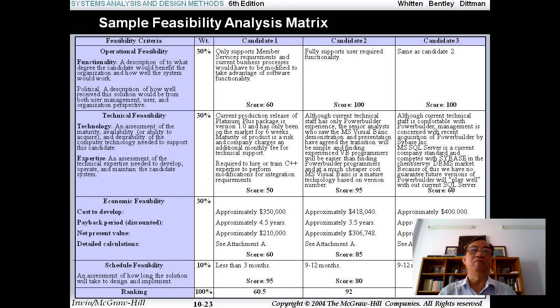You have many aspects like technical feasibility, economic feasibility, and schedule feasibility. For example, you see the schedule feasibility for candidate one is less than three months, but for candidate two, maybe nine or ten months. Candidate three is nine or ten months. So candidate one because less than three months, the score is a little bit high, now is a score 95. But candidate two is only 80, and candidate three is 85.